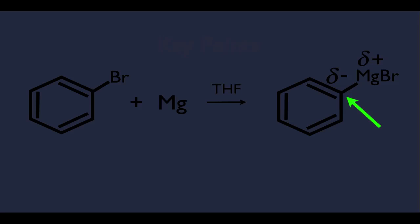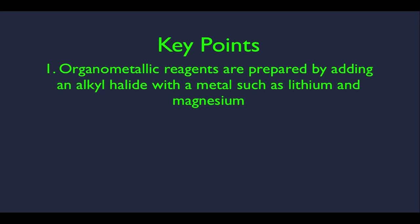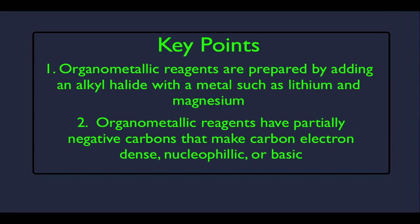That's how we make our organometallic reagents — that's what it's all about. To summarize the key points: organometallic reagents are prepared by adding an alkyl halide with a metal such as lithium and magnesium. And the whole point is that organometallic reagents have partially negative carbons that make carbon electron-dense, nucleophilic, or basic.